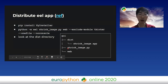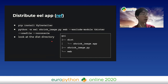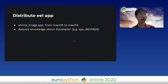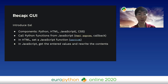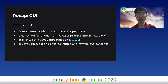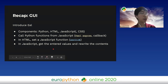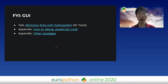You can distribute the Eel app using PyInstaller. Install with the installer, then type a command to create a distributable binary in the dist directory. Note that distribution requires knowledge of PyInstaller and in some cases may not be easy. In summary: Eel enables JavaScript to call Python functions. To handle input and display on screen in JavaScript, get the entered values and rewrite the contents.